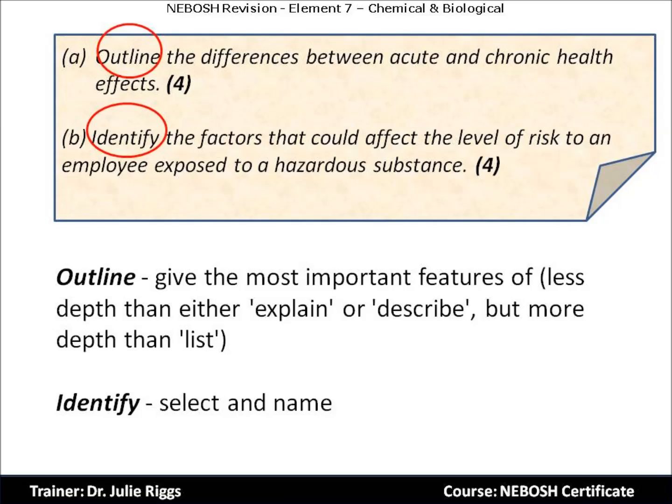Part A requires us to outline, which means give the most important feature. This is less depth than either explain or describe, but certainly more depth than list. Consider a bullet point with perhaps a line or two lines underneath. Part B requires you to identify, which means select and name. Therefore we don't need descriptions, nor do we need a lengthy explanation.